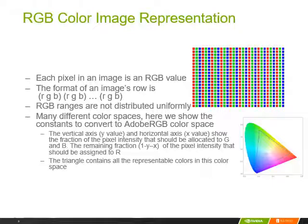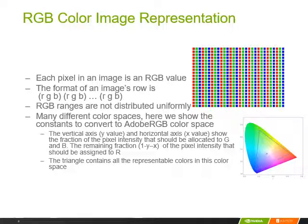This slide shows the RGB representation of color images. In the RGB representation, each color in a color image is represented with an R value, a G value, and a B value. You can think about these values as the intensity of red, green, and blue when generating each pixel. When we use an RGB representation, we can think about it as a linear combination of R, G, and B in generating pixels.